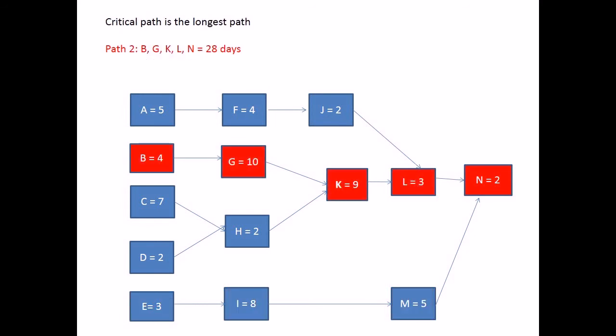Using this information you can now identify the critical path for your project, as it is always the longest. Therefore for this example, path number 2, highlighted in red, is the critical path, as it is the longest with the duration of 28 days. We also know that path 1 is the shortest. It will only take 16 days to complete. Therefore we know that it has the most contingency.